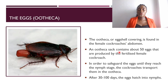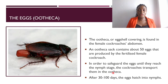The ootheca, or eggshell covering, is found in the female cockroach's abdomen. An ootheca sac contains about 50 eggs produced by the fertilized female cockroach. Fertilization occurs when the male and female mate. In order to safeguard the eggs until they reach the nymph stage, the cockroaches transport them in the ootheca. After 30 to 100 days, the eggs hatch into the nymph.